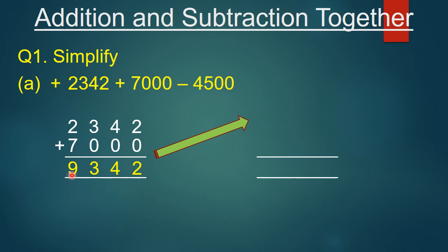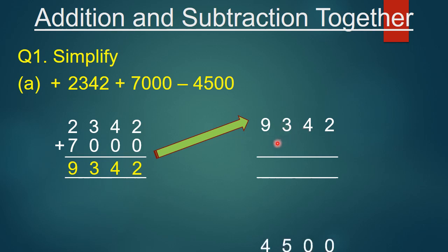But our sum is not completed yet — abhi humara sum pura nahi hua hai. As I told you, when addition and subtraction are given together, we always add first and then subtract. Abhi humane add toh kar liya hai. Now we will subtract 4500 from 9342. So we write 9342 on top since it is bigger than 4500, and 4500 below it.